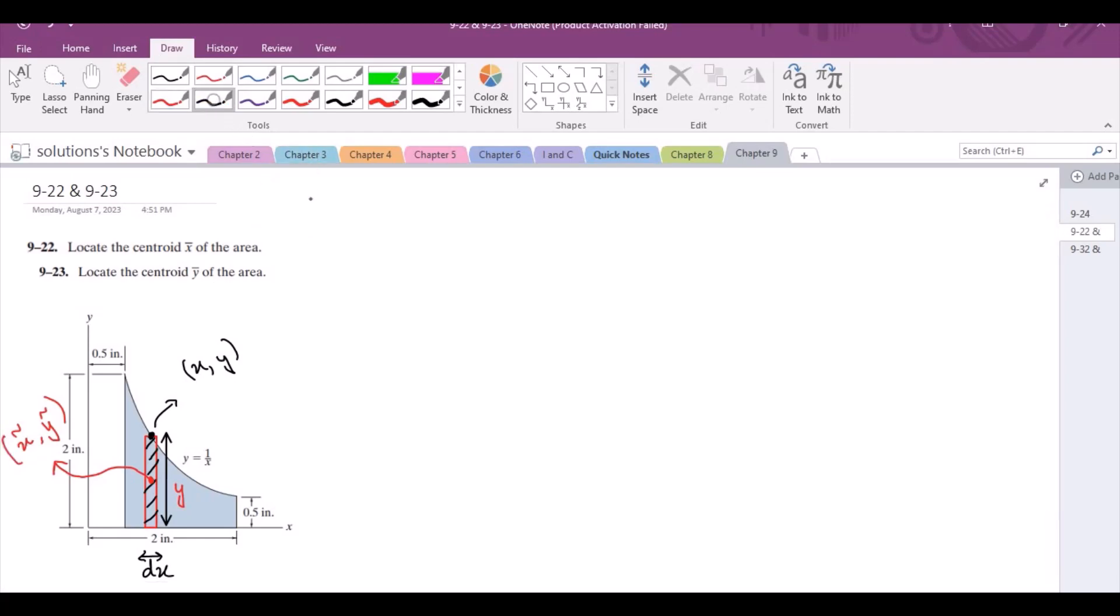Now let's write the formulas. So x bar equals integral of x coordinate of centroid of our rectangular strip, which is represented by x curly, into the differential area divided by integration of differential area. y bar equals integral of y curly into the differential area divided by integral of differential area. Now here, the differential area represents the area of our rectangular strip, which means y dx, where y is the height and dx is the width.